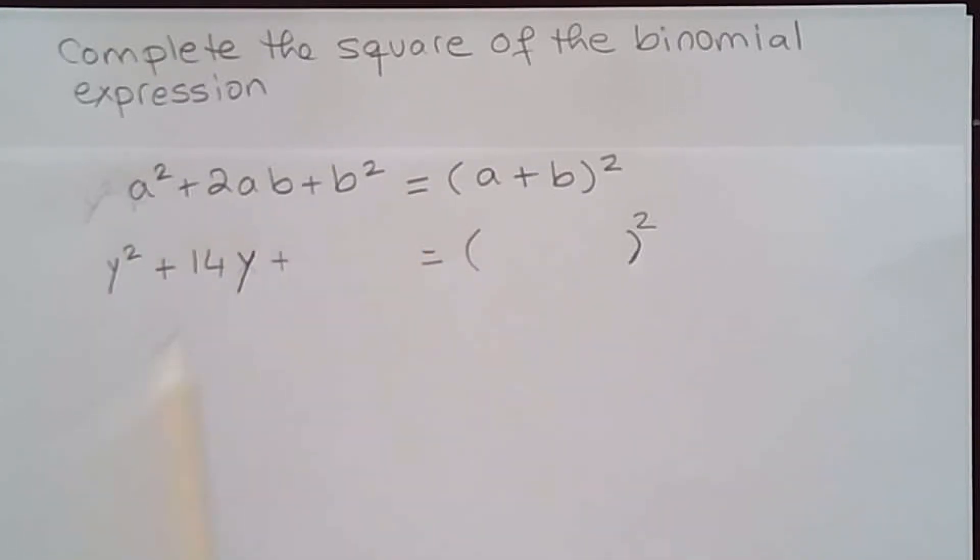So here's an example: y² + 14y. Okay, so I have the first two terms of the trinomial. I need to add b². So first I need to know what b is.